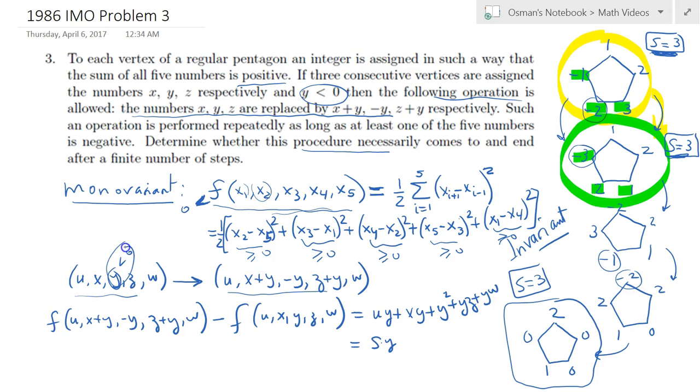But that's simply equal to, if you factor out the y, you would get (u plus x plus y plus z plus w) times y. So it's s times y. But recall that y was negative—it was one of them which is negative—and s is a positive number. So we know that the initial sum is positive, so that whole thing will be negative, suggesting that as we apply the operation, the value of our function is decreasing.